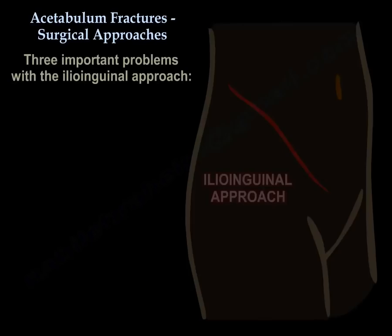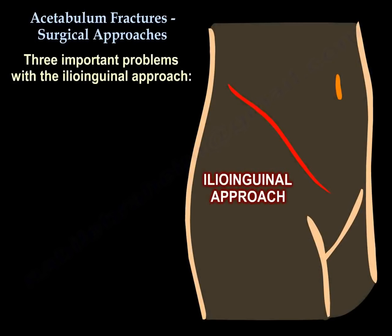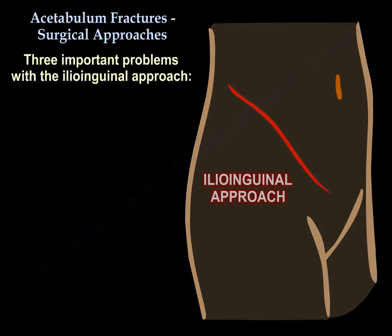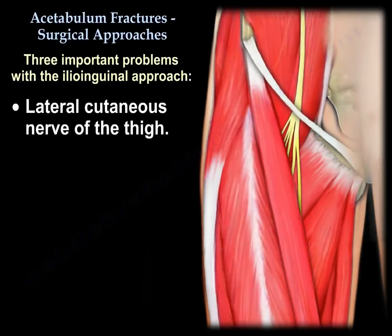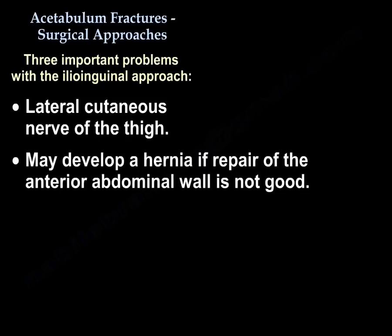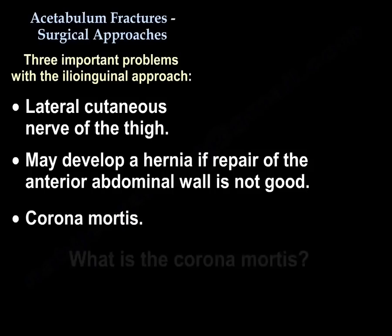There are three important problems with the ilioinguinal approach. The first one is the lateral cutaneous nerve of the thigh. The second one is that you can develop a hernia if the repair of the anterior abdominal wall is not good. The third one is the corona mortis.